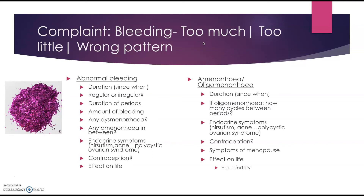Amenorrhea is no periods at all, and oligomenorrhea is far fewer periods — for example, you have one period and then three months of nothing, and then another one. Again, you want to know how long that problem has been there for: has it been since menarche, or is it more recent? If the woman is oligomenorrheic, how many cycles are there between menstruations? In cases of amenorrhea or oligomenorrhea, endocrinopathies really do play a key part, so you'd want to ask about features of polycystic ovarian syndrome. And again, contraception — it often takes the period away or gives irregular spotting, so that could be the cause of the problem.